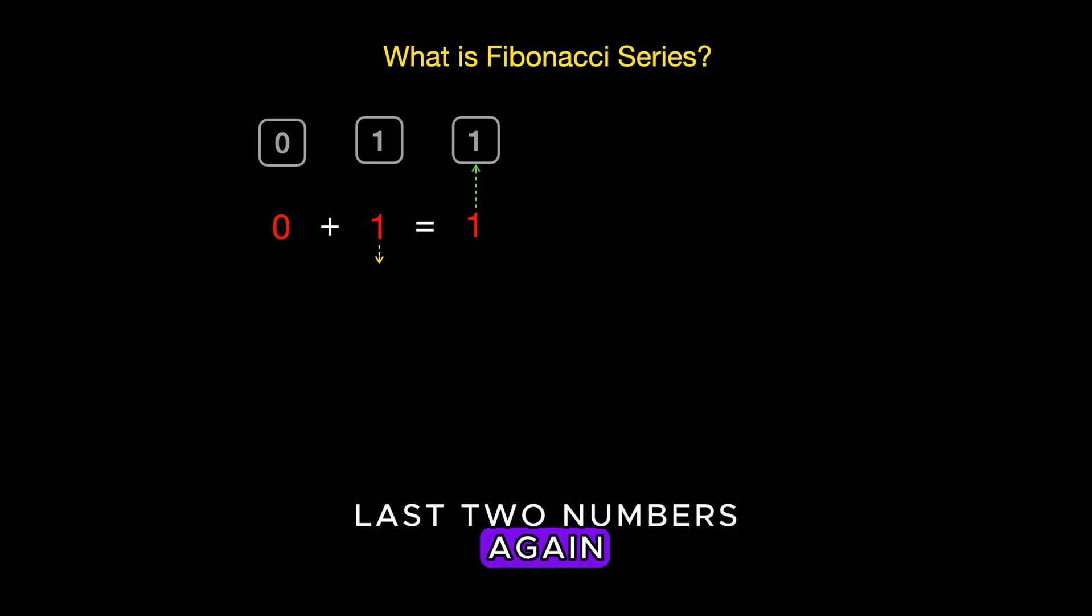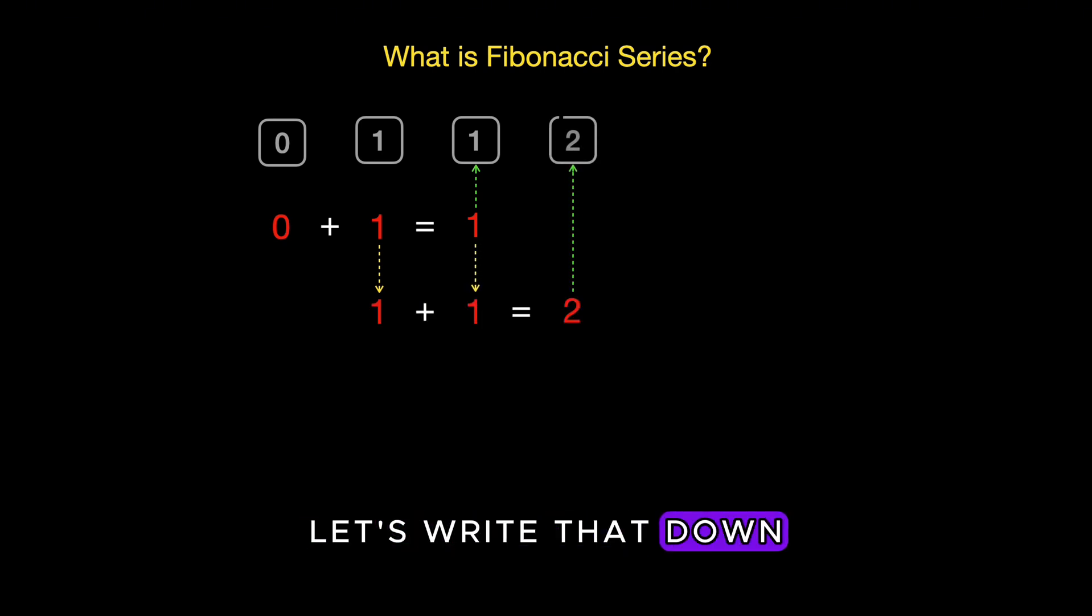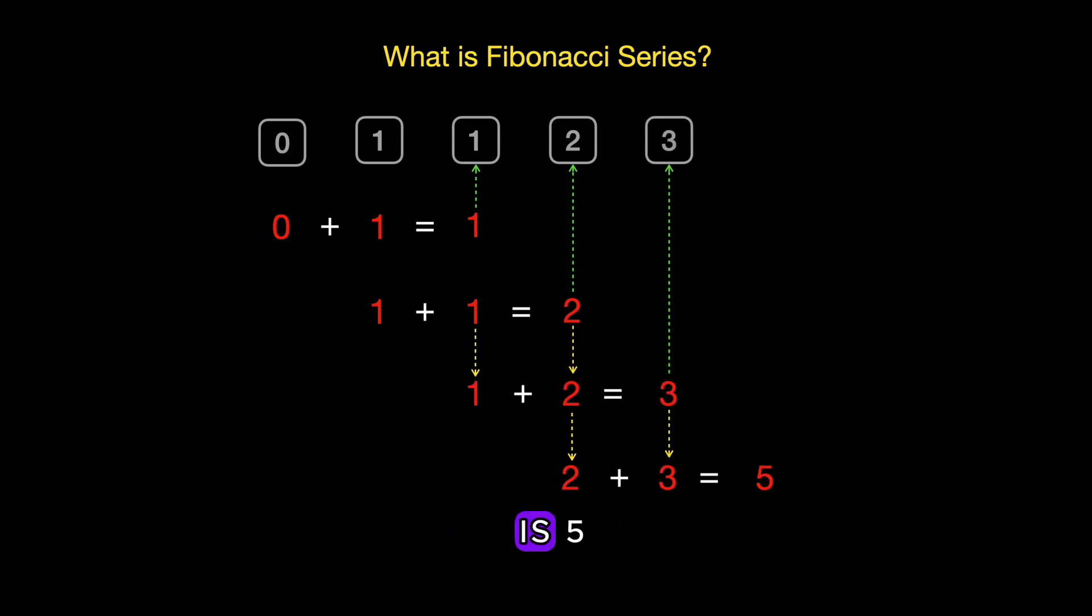Next, we add the last two numbers again. So one plus one is two. Let's write that down. We keep going. One plus two is three. Then two plus three is five. See what's happening? We just keep adding the last two numbers to get the next one. You can keep going as long as you want.